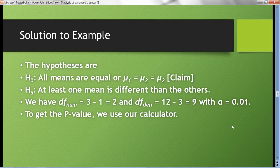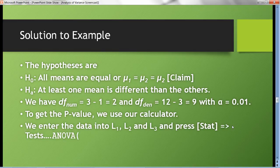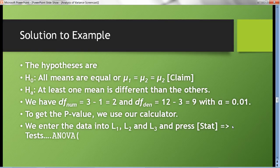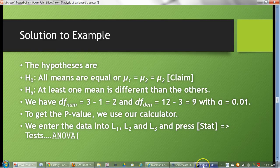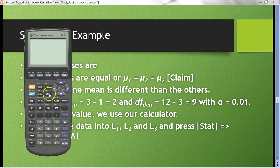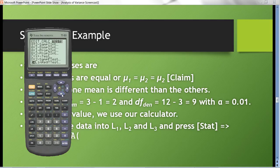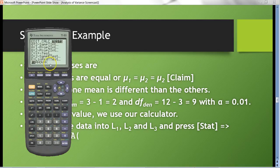To get the p-value, we want to use our calculator. We'll enter the data in the three lists, press stat, test, and analysis of variance. So let's go ahead and do that now. Go to stat, go over to test, and in the test menu, you have to scroll all the way to the very bottom, and you'll get analysis of variance down there, ANOVA.